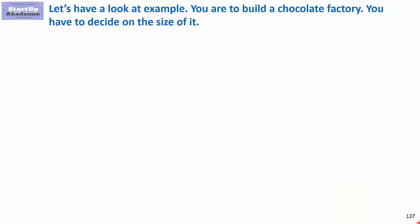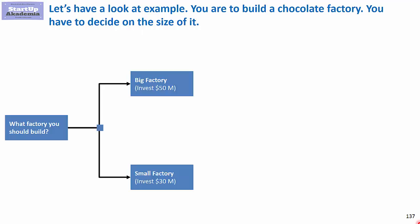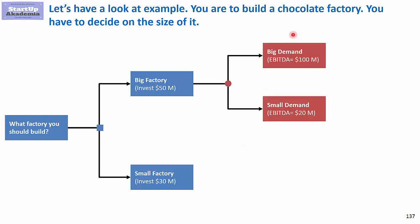Imagine that you are to build a chocolate factory and you have to decide on the size of this factory. You have basically two options: you can either create a big factory that will cost 50 million, or a smaller version that will cost 30 million. The uncertainty is around the size of the demand — it can be big demand or small demand.